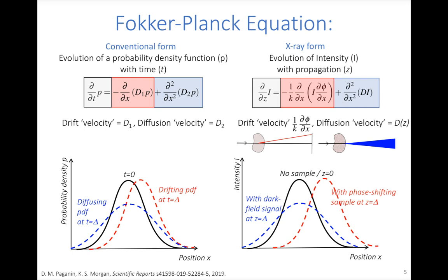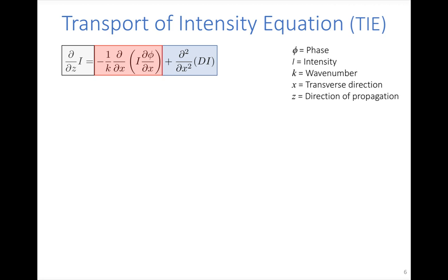Those familiar with the transport of intensity equation (TIE) may notice that the first part of the X-ray Fokker-Planck equation looks exactly like the TIE. If we remove the diffusion term and look only at the first part, that is precisely what it is — an equation describing how intensity changes with propagation in the presence of phase effects.